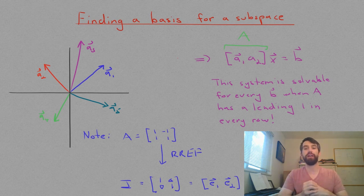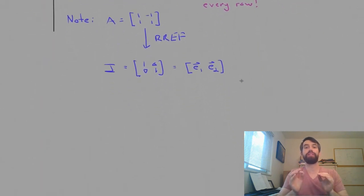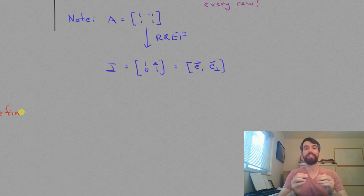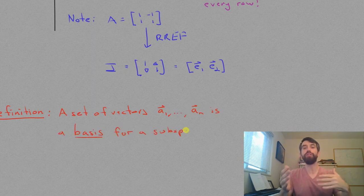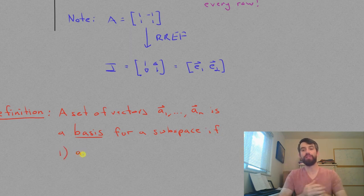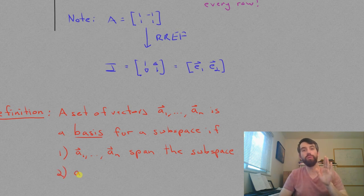This introduces us to the idea of a basis. A basis is a set of vectors that spans the subspace we are interested in, but has as few vectors as possible. It turns out that this is equivalent to asking that my set of vectors which span all of R² are also linearly independent.